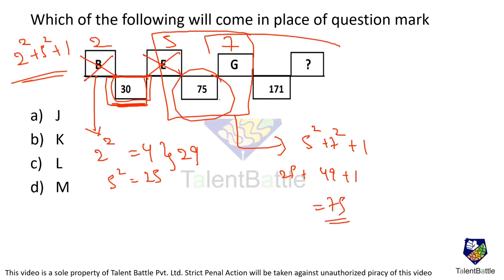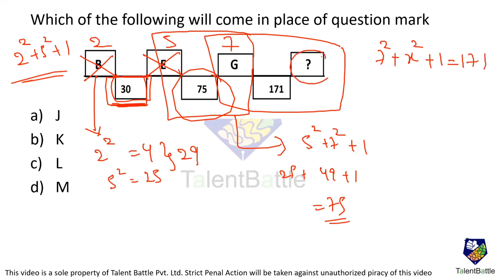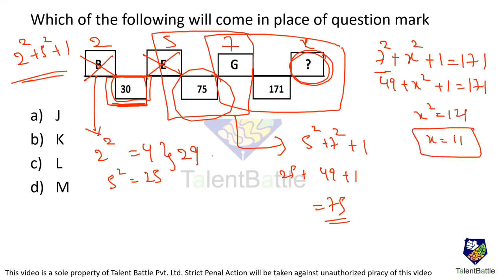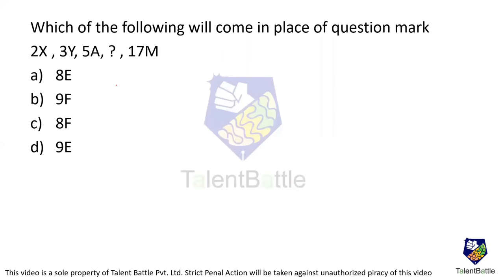Now for the unknown alphabet x: 7²+x²+1 = 171. So 49+x²+1=171, meaning x²=121, so x=11. The 11th alphabet is K. So the answer for this question is option B. The logic was: square the alphabets' position numbers, sum them, and add 1.